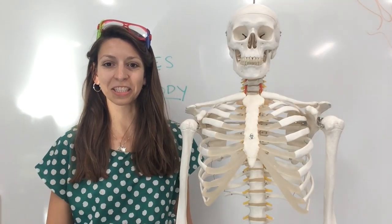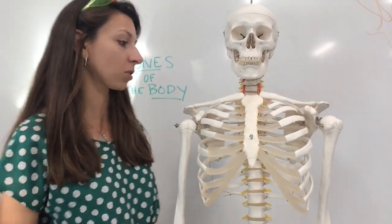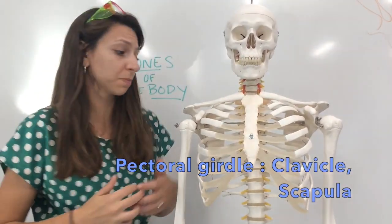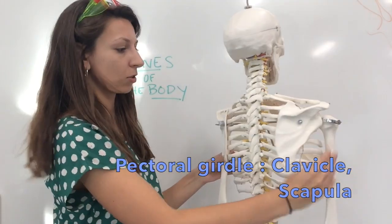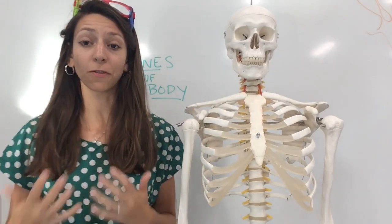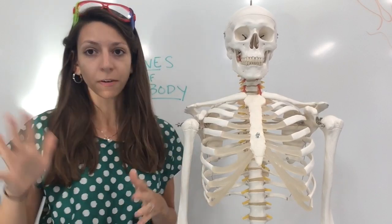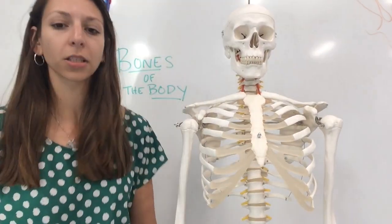Now we're getting into our appendicular skeleton — our appendages and the things that support them. First we have our pectoral girdle, which includes the clavicle, which helps hold our shoulders in place, and the two scapulae. The most commonly broken bone in the body is actually the clavicle, because it's very easy to fall and crack it — this happens often in both older people and children. The appendicular skeleton has 126 bones total, so there are actually more bones in our appendages than in our axial skeleton.